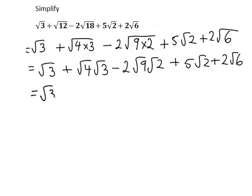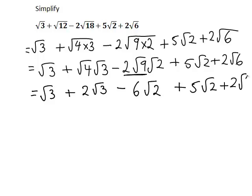And now we can see that √4 is 2. So what started as √12 is in fact 2√3. This bit here, 2 times the √9 - now the √9 is just 3, so that becomes 2×3, so that's just 6√2. And the other terms remain the same.